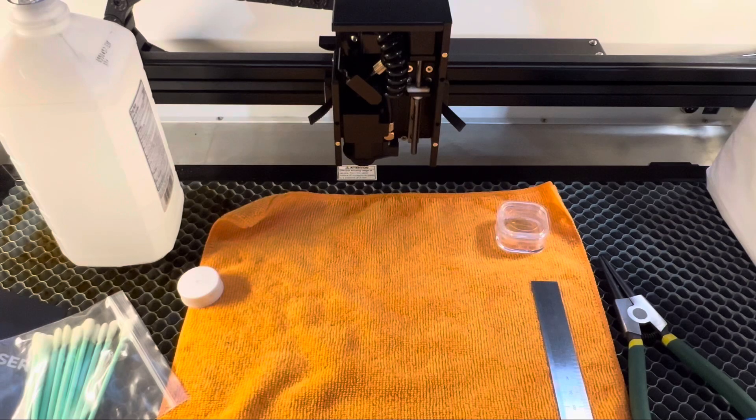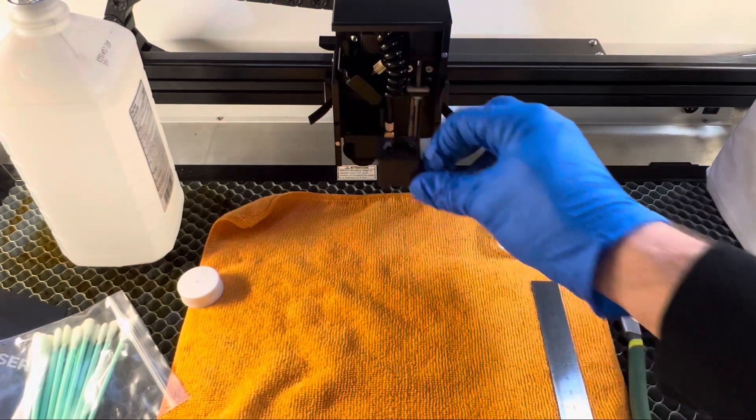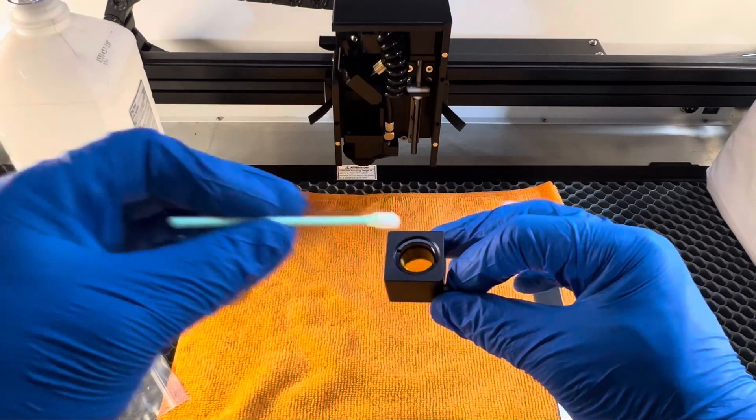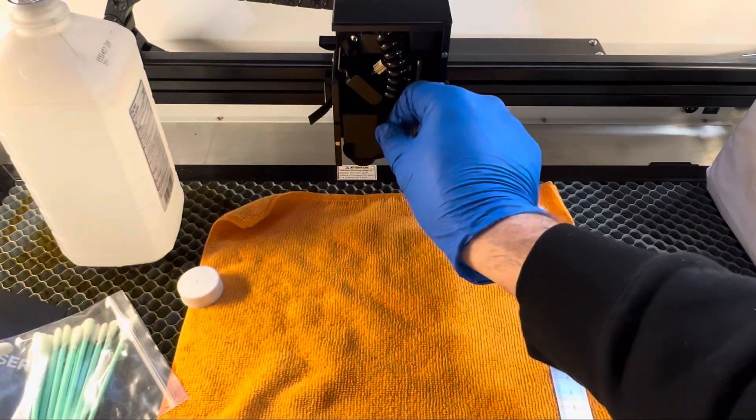One thing I want to point out: if you're just cleaning your lens and don't want to remove it from the lens holder, all you have to do is pull it out, grab a Q-tip, get some isopropyl alcohol, clean the top, clean the bottom, and you're back in business.